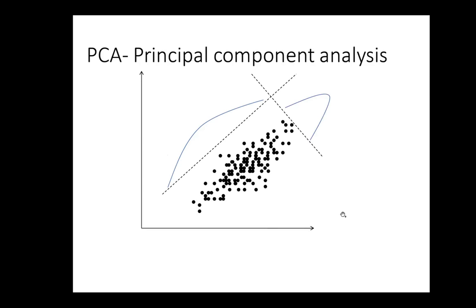The second principal component is orthogonal and uncorrelated to the first, capturing the second-most variation. Note that the axis direction can be flipped — if you get a reversed picture compared to the solution, that is not a problem; it is the same PCA projection, just with the axis direction inverted.